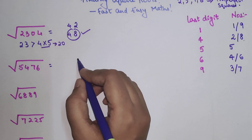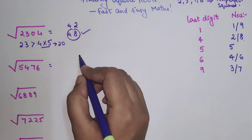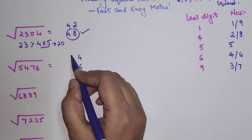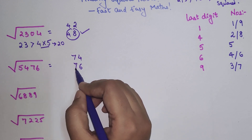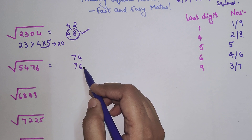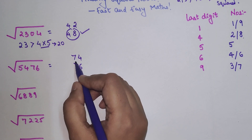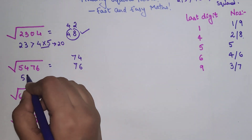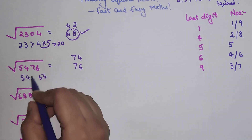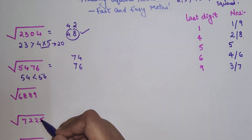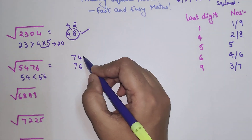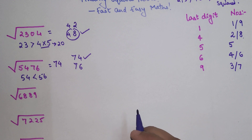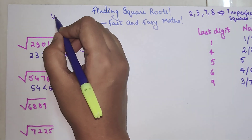Next, the square root of 5476. The last digit is 6, so possible unit digits are 4 or 6. Striking out the last two digits gives 54, which is close to 49, which is 7². So the answer is either 74 or 76. We multiply 7×8=56. Since 54 is less than 56, we take the lesser value, so the answer is 74.